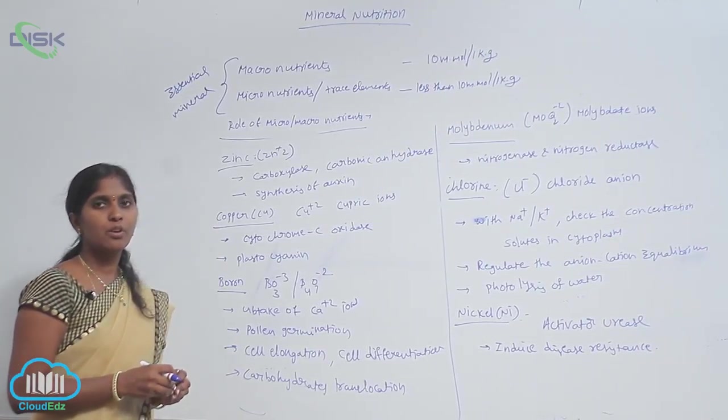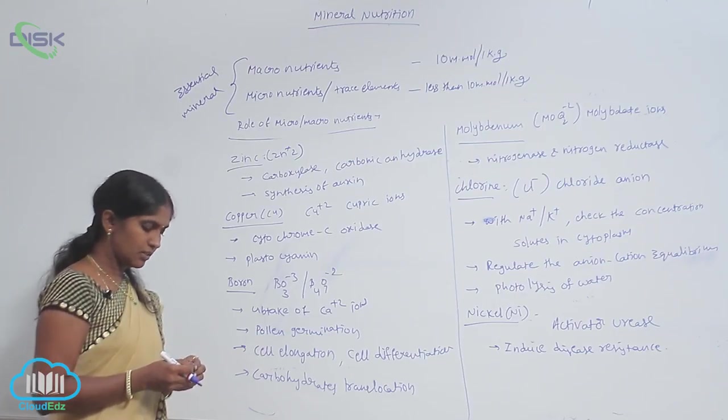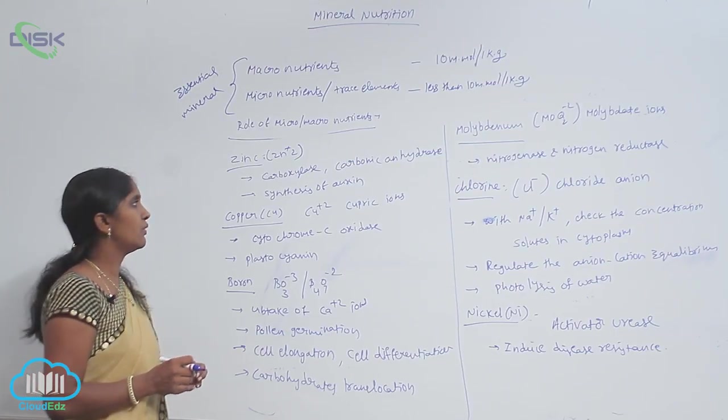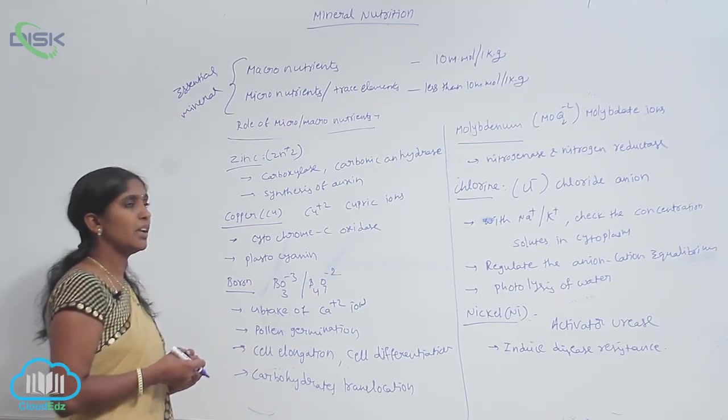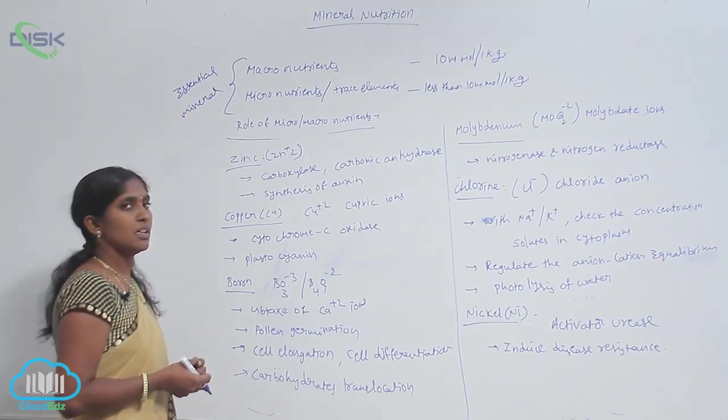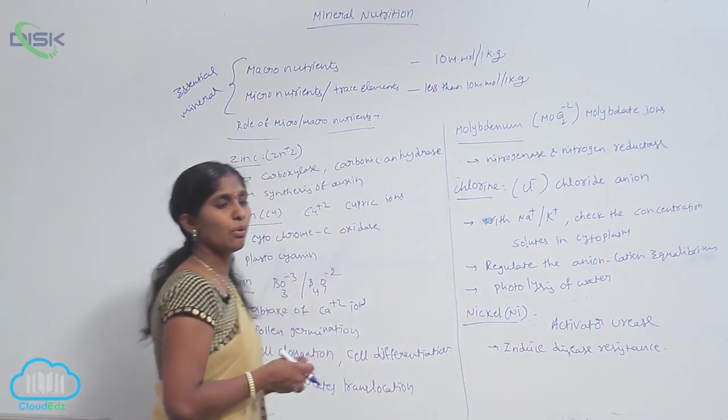Zinc. The absorbed form of zinc is Zn+2. It is a key component for enzymes carboxylase and carbonic anhydrase. It is also involved in synthesis of auxins.